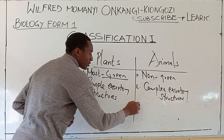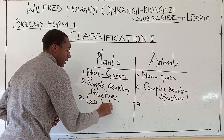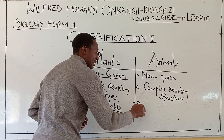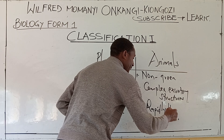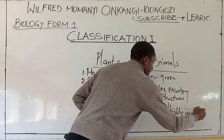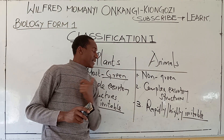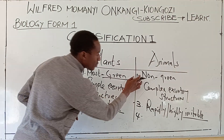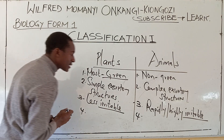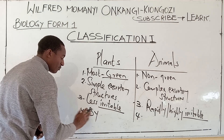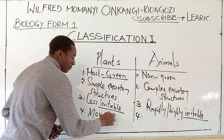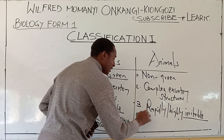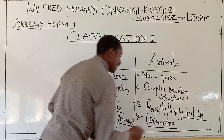Number three is about irritability. Plants are less irritable — they respond slowly to changes in the environment — while animals are rapidly or highly irritable and respond quickly to changes in the environment. Number four is about movement: plants move by growing, which we call localized movements, while animals are locomotor, meaning they move from one point to another.